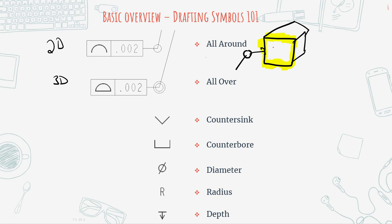Whereas if you use 'all over' — for instance, the all over profile of a surface — that's telling you that this entire 3D object has to be within 0.002. That's what all over means. So the major difference is: all round is a 2D representation holding something to a 2D perimeter, while all over is holding something to a 3D set of surfaces.